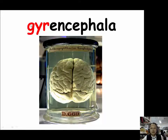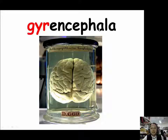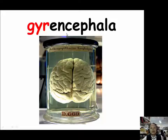For the prefix GYR, our example is gyrencephalic. The part ENCEPHAL means brain, so gyrencephalic refers to a convoluted brain — one that has gyri, which are the folds you see on the surface of the brain.